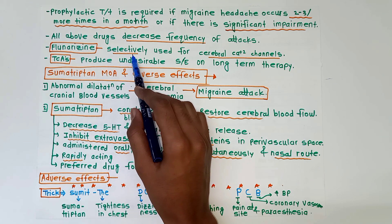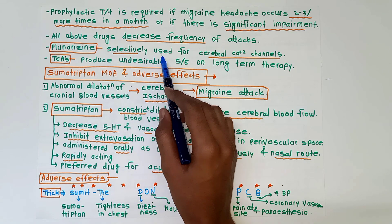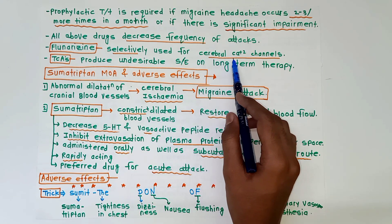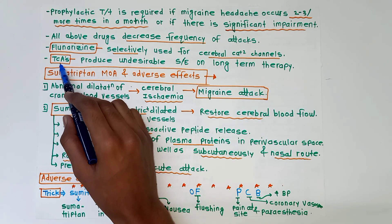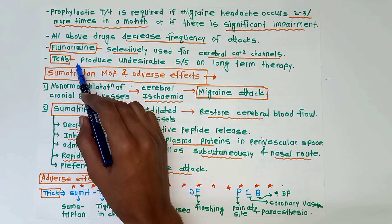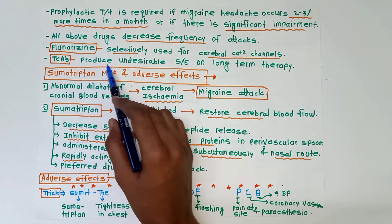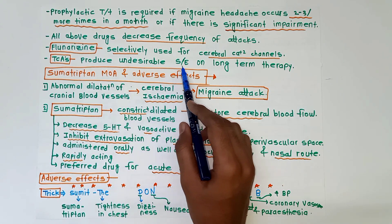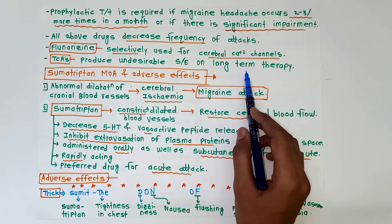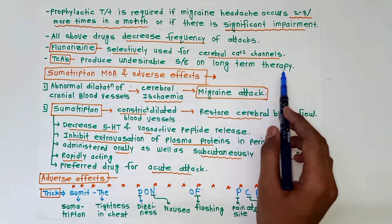An important point regarding flunarizine is that it selectively acts on cerebral calcium channels. TCA antidepressants produce undesirable side effects on long-term therapy.